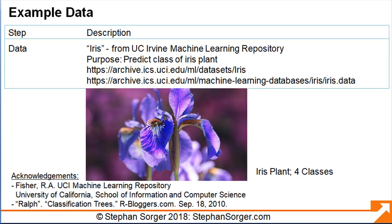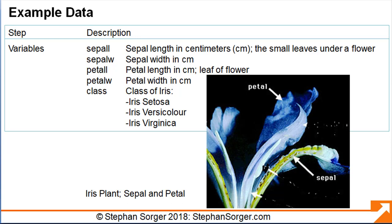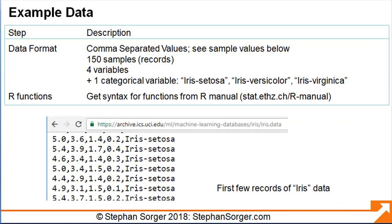For our example data set, we selected the IRIS data set from the UC Irvine Machine Learning Repository. The purpose of the data is to classify IRIS plants into four different classes based on certain physical characteristics. The data set includes observations of many different iris plants, including physical characteristics such as the length and width of the sepal and the length and width of the flower petals. The data is in CSV format, does not include a header row, and includes 150 samples with four continuous numerical variables and one categorical variable, namely the class of plant.